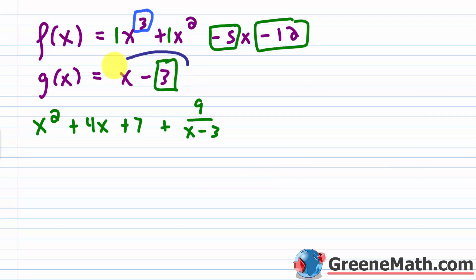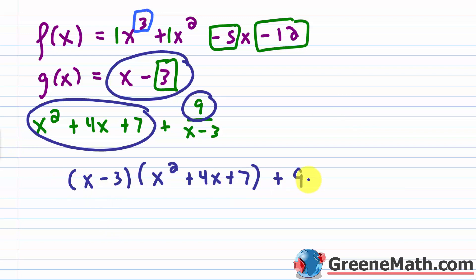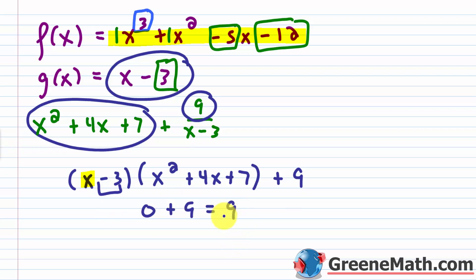We're going to do the same thing with polynomials. The divisor is x minus 3, multiplied by the quotient x squared plus 4x plus 7, plus the remainder 9. And if you plug in a 3, because of the minus 3 in the divisor, 3 minus 3 equals 0, and 0 times whatever the quotient is equals 0. So I'm left with 0 plus 9, which is 9 — exactly what we found by plugging 3 into f of x and through synthetic division.